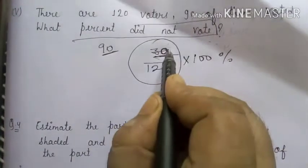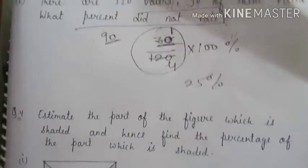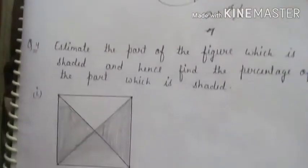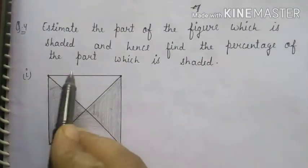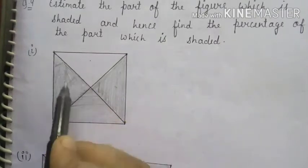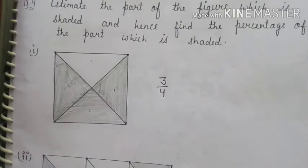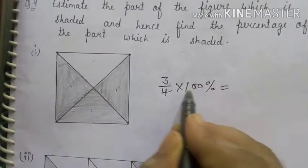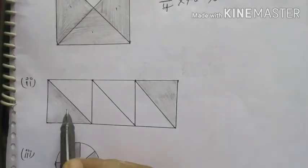Question 4: Estimate the part of the figure which is shaded and find the percentage. First part: there are 4 parts and 3 are shaded, so the fraction is 3 upon 4. Multiply by 100: 100 divided by 4 is 25, and 25 × 3 = 75%. So 75% is shaded. Second part: there are 6 total parts and 2 are shaded, written as 2 upon 6.